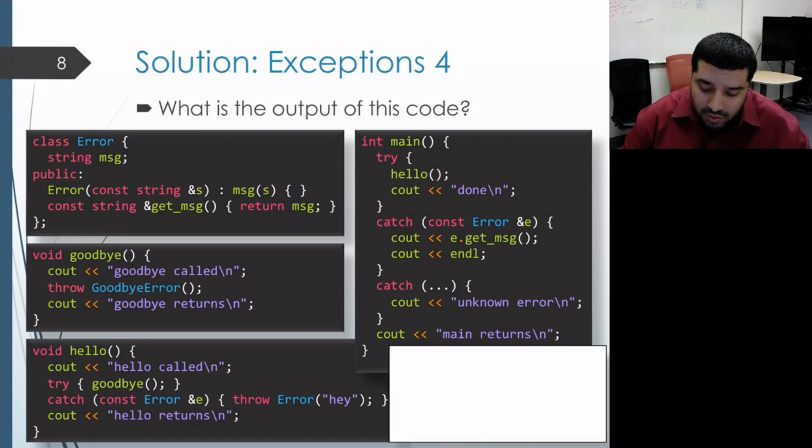All right, when this program starts, it makes a call to main. So we get an activation record for main on our call stack. And it proceeds to execute the body of main.